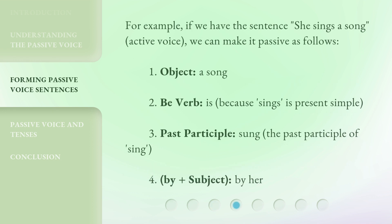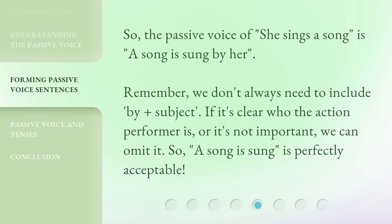For example, if we have the sentence 'She sings a song' (active voice), we can make it passive as follows. 1. Object: 'a song.' 2. Be verb: 'is' — because 'sings' is present simple. 3. Past participle: 'sung' — the past participle of 'sing.' 4. By + subject: 'by her.' So, the passive voice of 'She sings a song' is 'A song is sung by her.' Remember, we don't always need to include 'by + subject' — if it's clear who the action performer is or it's not important, we can omit it. So 'A song is sung' is perfectly acceptable.